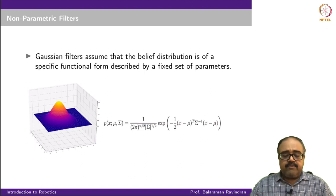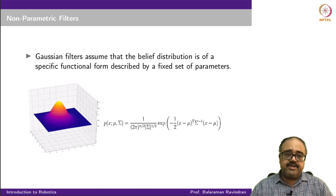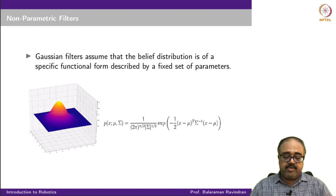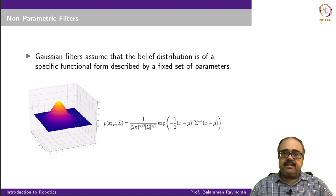So far we have been looking at Gaussian filters for state estimation. The Gaussian filters essentially assume that your belief distribution is of a specific functional form — in this case, a multivariate Gaussian described by a fixed set of parameters, namely mu and sigma. These are called parametric filters.